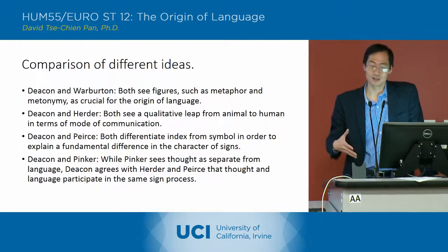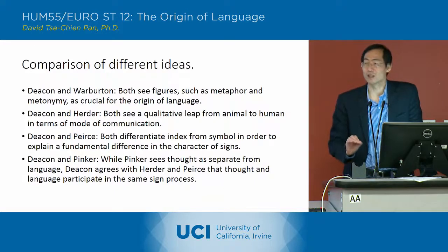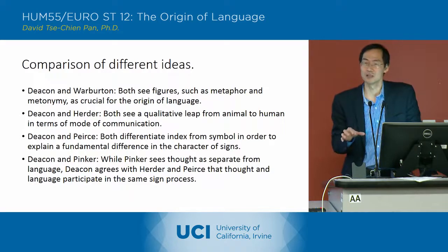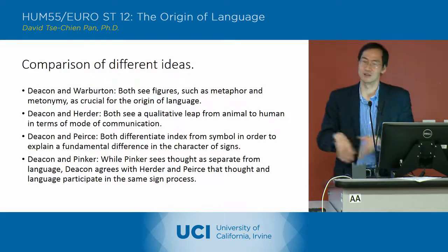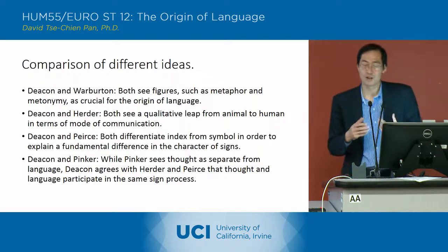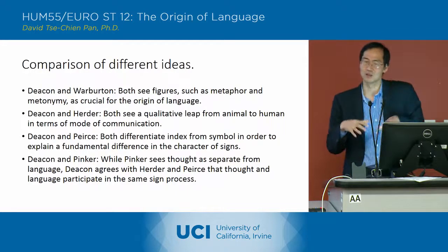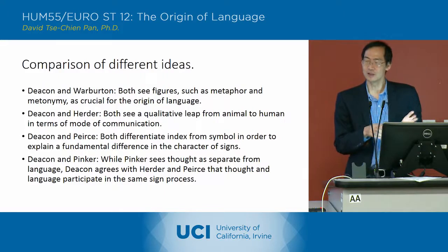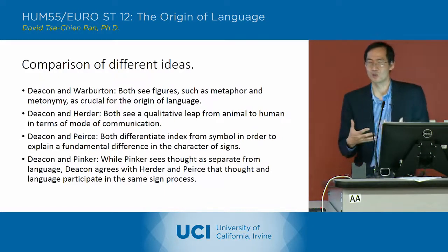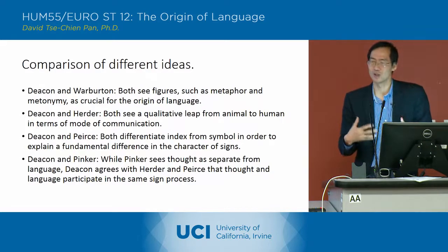It's also clear that Deacon is setting himself against Steven Pinker's idea about how language functions in the brain. Pinker sees thought as something separate from language in the brain — there's this mental language of thought, and then there's human language, and those are two separate processes. Deacon, on the other hand — and here he's agreeing with Herder and Peirce — argues that thought and language participate in the same sign process. You can't separate those two processes. There's a single kind of symbolic process of symbolic relationships, and symbolic understanding of signs that thought participates in, but also language participates in. What's most important is the ways in which signs relate to each other and set up these relationships to objects within a symbolic context.